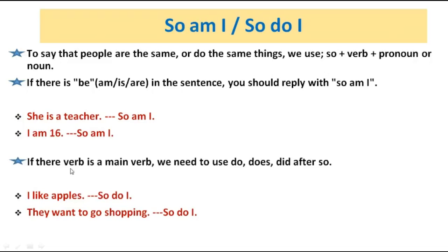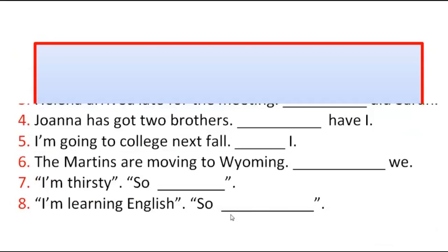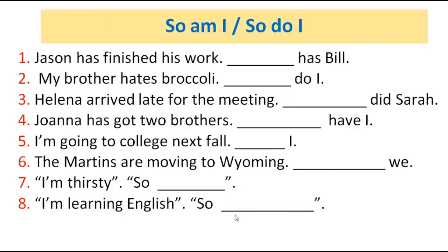If the verb is a main verb, we need to use do, does, or did after 'so.' For example: I like apples — so do I. They want to go shopping — so do I. Now it's practice time — let's do it together.